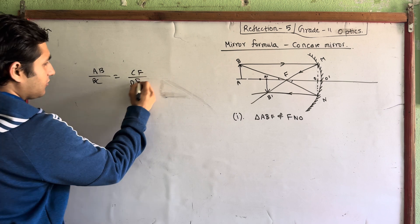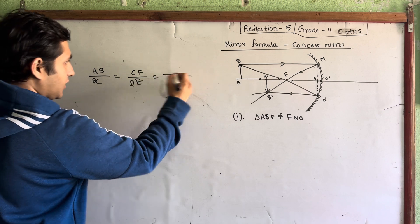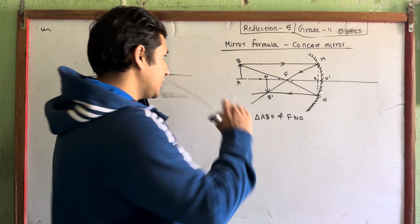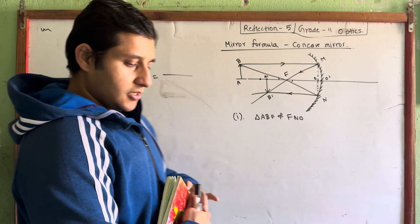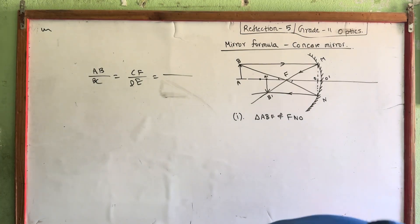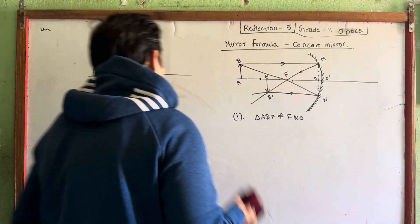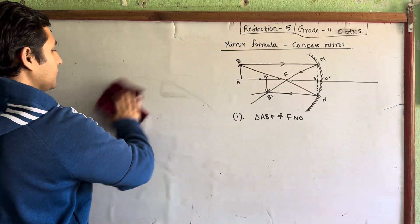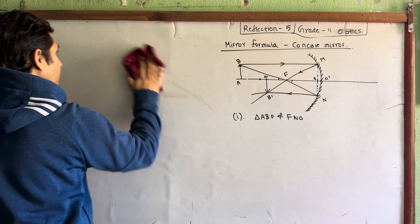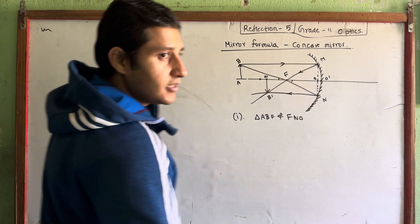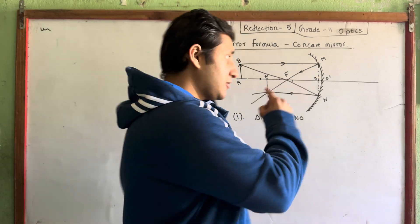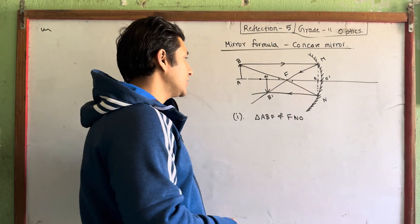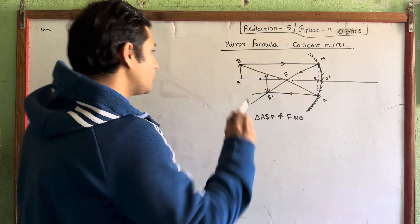And you can see this line. Then you can see this line, and you can see that. The proof is done. When you see this line, you can see that triangle.